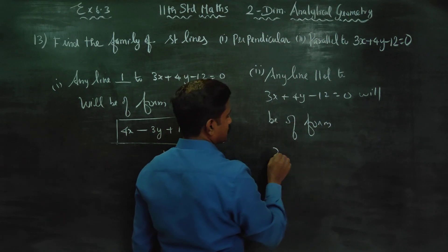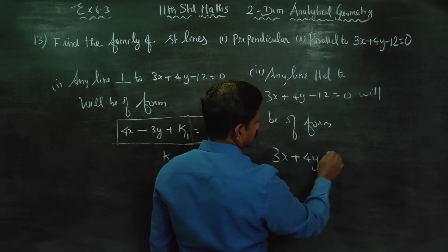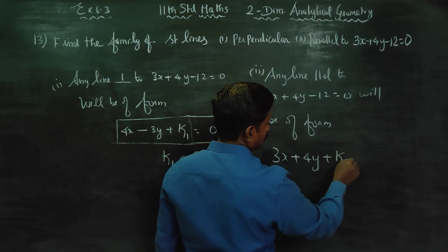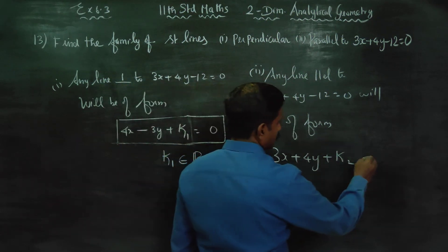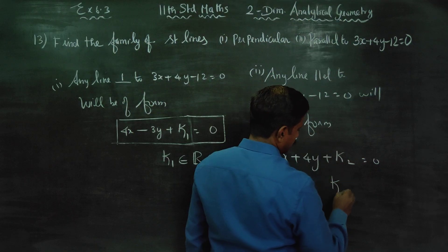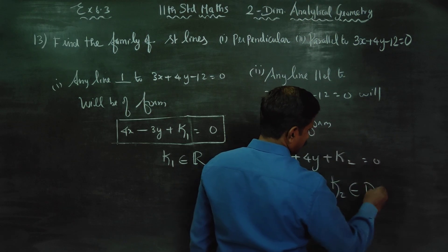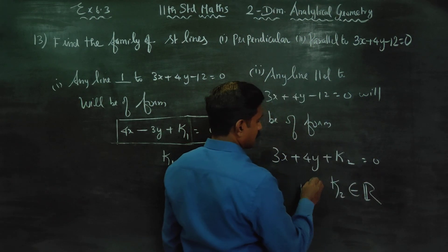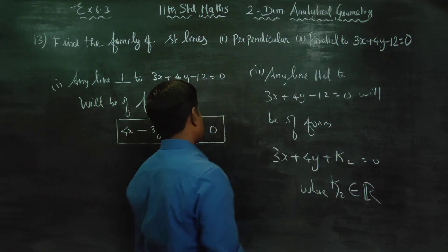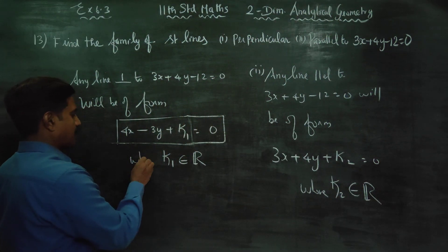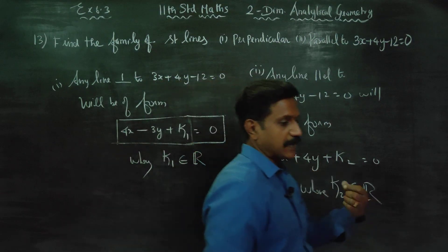The x coefficient, y coefficient, and constant with k2 is equal to 0, where k2 belongs to real numbers. Where k1 belongs to real numbers — this is the family of straight lines.